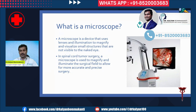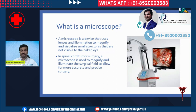This is a surgical microscope. A microscope is a device that uses lenses and illumination to magnify and visualize small structures that are not visible to the naked eye. In spinal cord tumor surgery, a microscope is used to magnify and illuminate the surgical field to allow for more accurate and precise surgery.